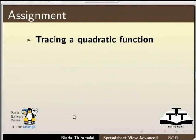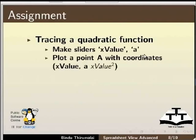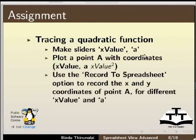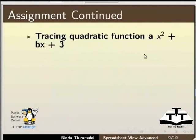Now for the assignment. The assignment consists of tracing a quadratic function by making sliders x_value and a, plotting a point A with coordinates x_value for the x coordinate and a * x_value² for the y coordinate. Use the Record to Spreadsheet option to record the x and y coordinates of point A for different x_value and a values, then predict and input the function f(x) = ax².